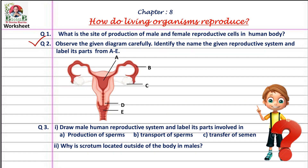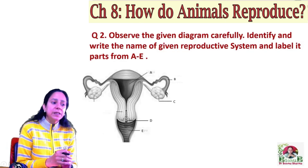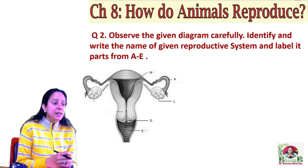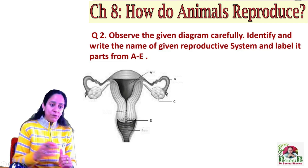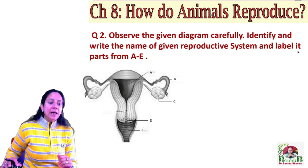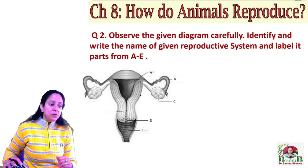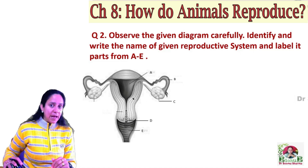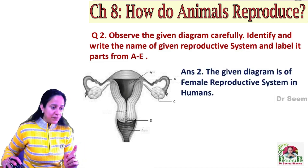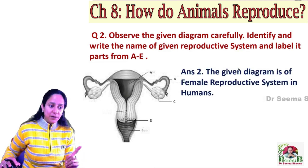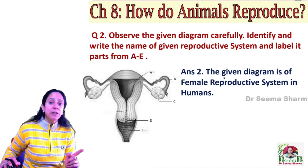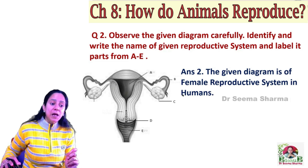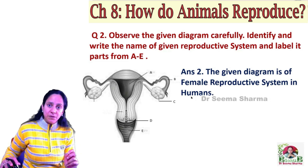Now I am taking the diagram-based question from this worksheet — that is question number two. The question is: observe the given diagram carefully. Identify and write the names of the given reproductive system and label its parts from A to E. The answer to the first part of this question is: the given diagram is of the female reproductive system in humans.